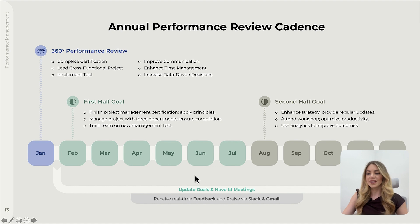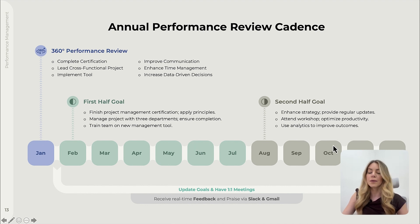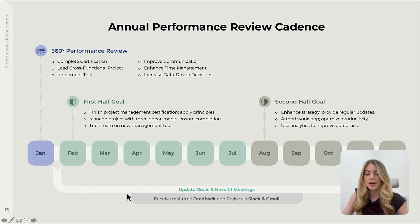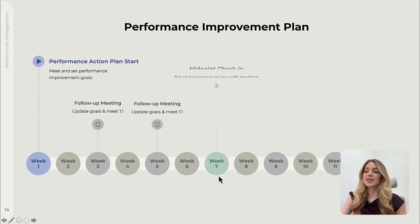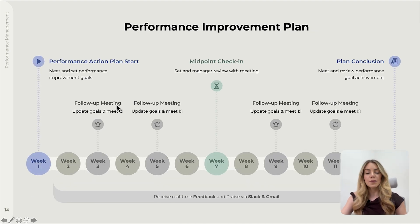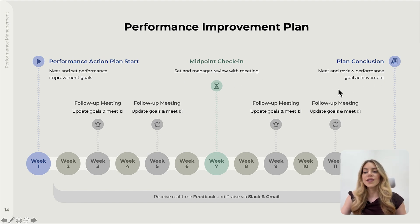The first tool we'll discuss is establishing an overall review cadence. This involves setting a clear timeline and roadmap for regular performance reviews. Both employees and managers should understand when these meetings will occur and what the expected outcomes and action plans are. For instance, an action plan might start with a goal-setting meeting, followed by a midpoint check-in, and end with a planned conclusion. This structured approach ensures continuous feedback and progress tracking.